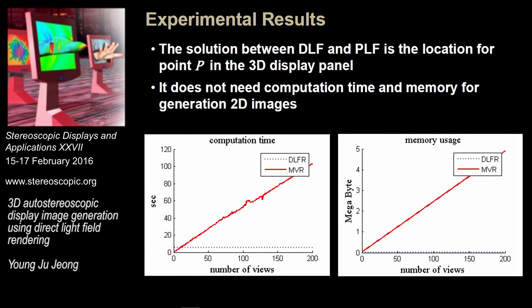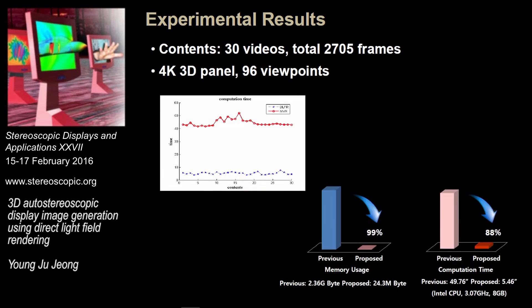This slide shows the experimental results. The proposed algorithm, DLFR, is independent of the number of views. The X-axis shows the number of views and the Y-axis shows computational time and memory usage. The previous method, multiple viewpoint rendering, increases with increasing number of viewpoints. We experimented with real stereo content including animation, stereo movies, and broadcasting data — all 3D videos, totaling 2,705 frames. Our display system is a 4K QHD 3D panel providing 96 viewpoints. We reduced memory usage by 99% and computational time by 80%.